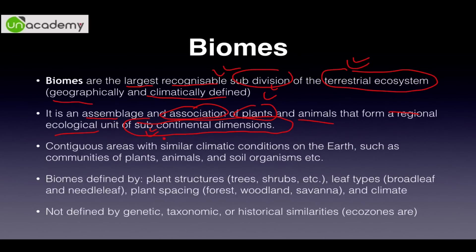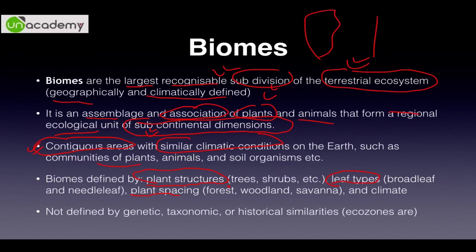A biome is a huge, contiguous area — meaning no breakage of similar climatic conditions — with communities of plants, animals, and soils that are also similar. Biomes are characterized by plant structure (trees, shrubs, herbs, grasslands), leaf types (broad or needle-like), plant spacing (dense forest, woodland, savanna), and climate. Ecozones, on the other hand, are defined by genetic, taxonomic, or historical similarities — while biomes are not.